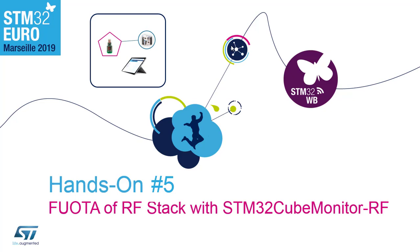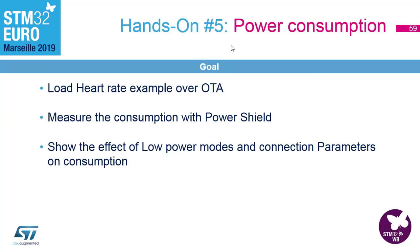We'll go to hands-on number five, which is quite interesting because it's the measuring of the consumption of the WB while in connection or advertising state. The goal is to upload over the air another example — a heart rate sensor — which has been optimized for low power consumption: no UART logs, no LCD displays, and it uses Stop 2 mode when there is no code to be executed. Stop 2 is the deepest low power mode usable while in connection or advertising state.